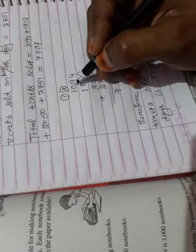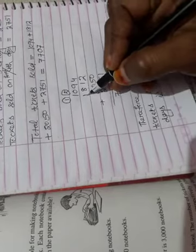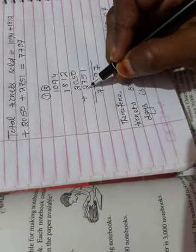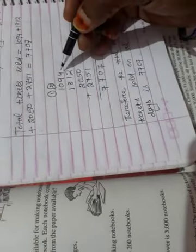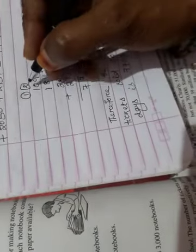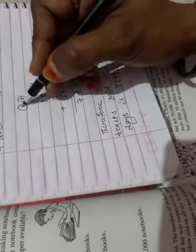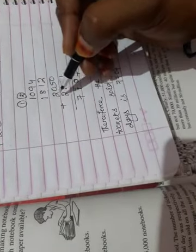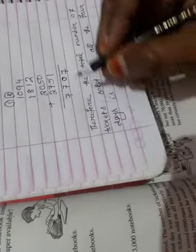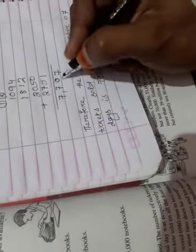Here, 1094 plus 1812 plus 2050 plus 2751. 4 plus 2, 6 plus 1, 7. 9 plus 1, 10. 5 plus 5, 10, 10, 10, 20, 0, 2. 8 plus 2, 10, plus 7, 17, 7, 1. 1, 1 plus 1, 2 plus 2, 4 plus 2, 6 plus 1, 7. Answer is 7707.